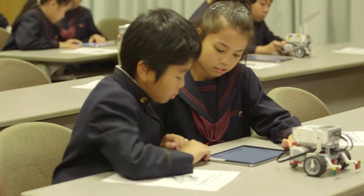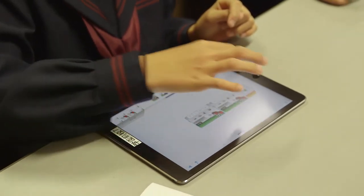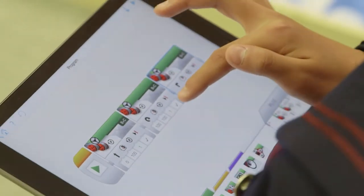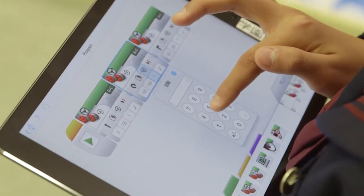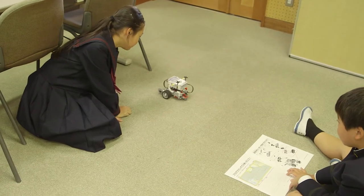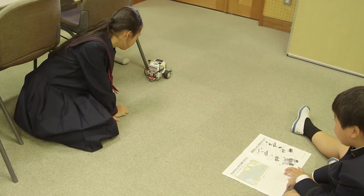Each team must program their robot to make it complete the course by itself. The simple code consists of a series of commands, such as advance for three seconds, turn 90 degrees left, turn again and so on.